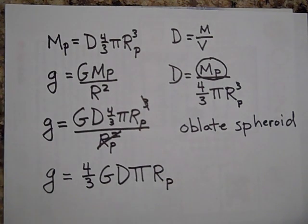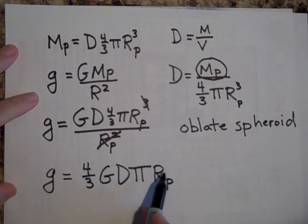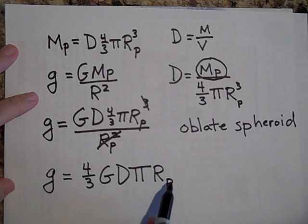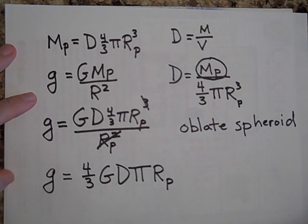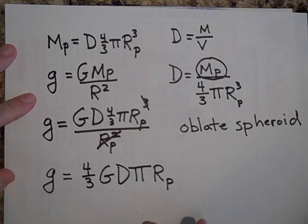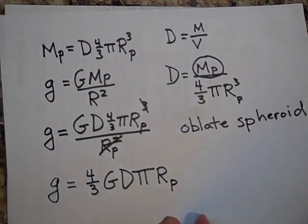And so as you go out, the g is directly proportional to the radius of the planet. Let me say a little bit more about this then and we'll call it a video.